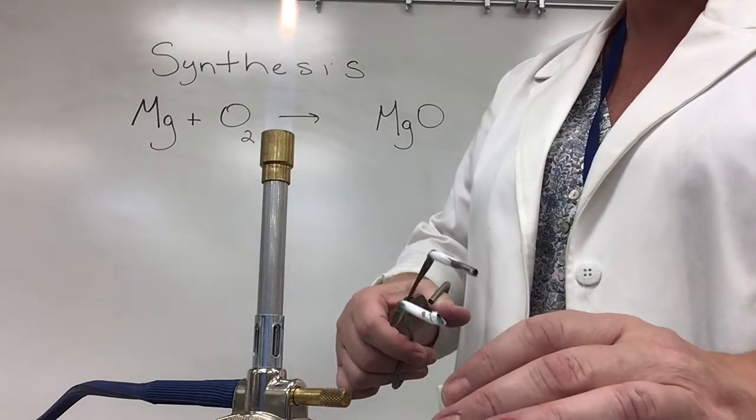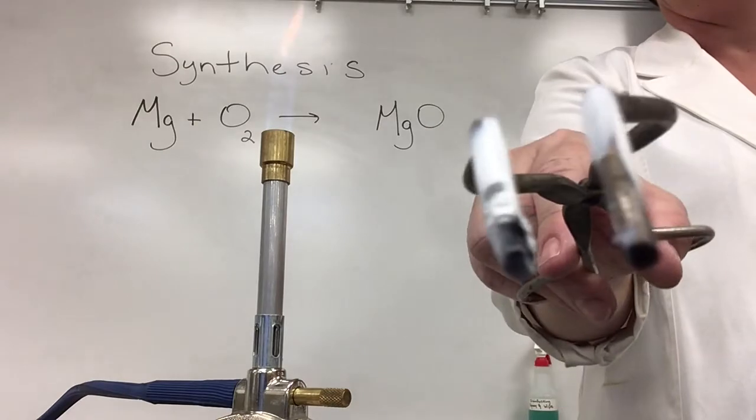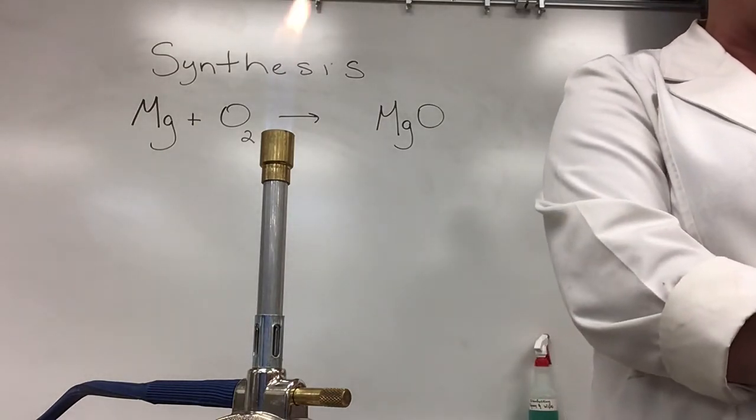Alrighty so what's left is kind of a gray ash and there's a little bit of that gray ash on my tongs as well and I'll show you what this gray ash looks like.